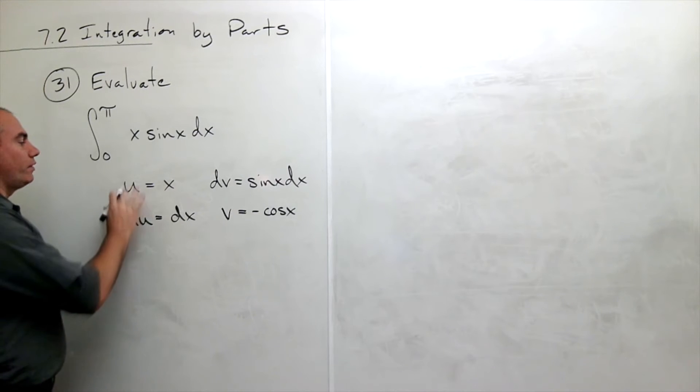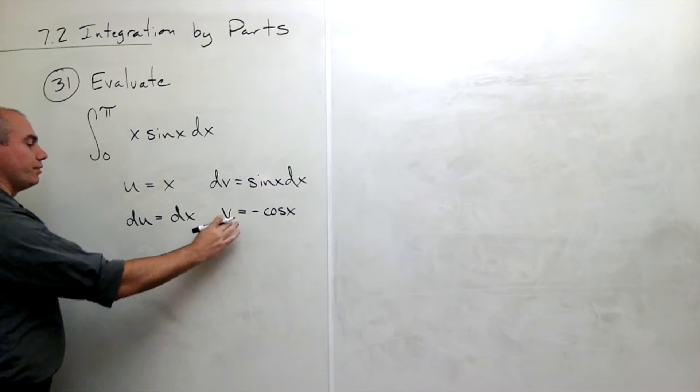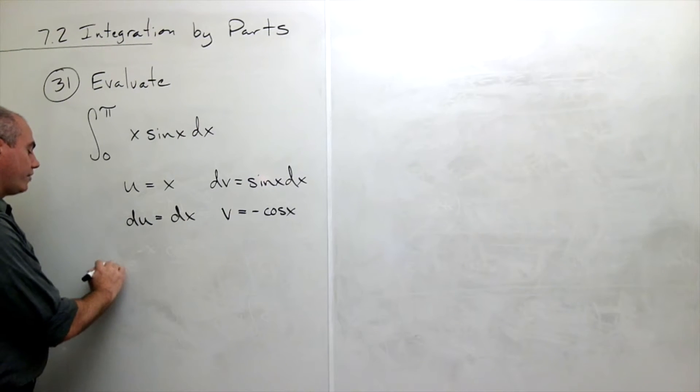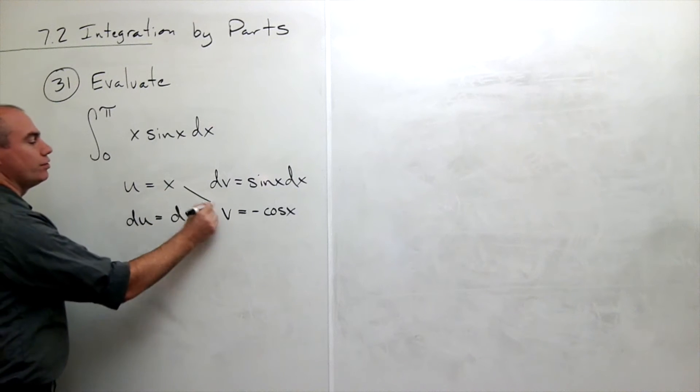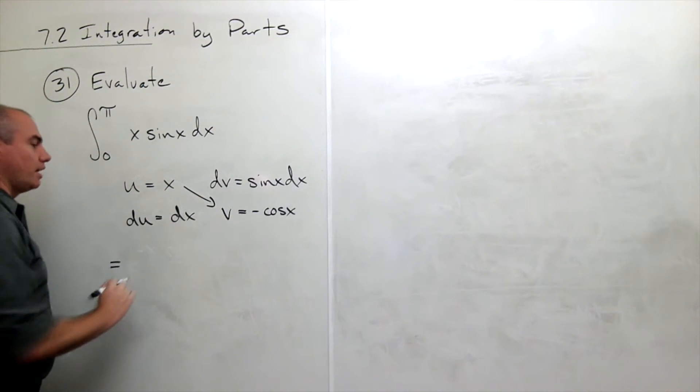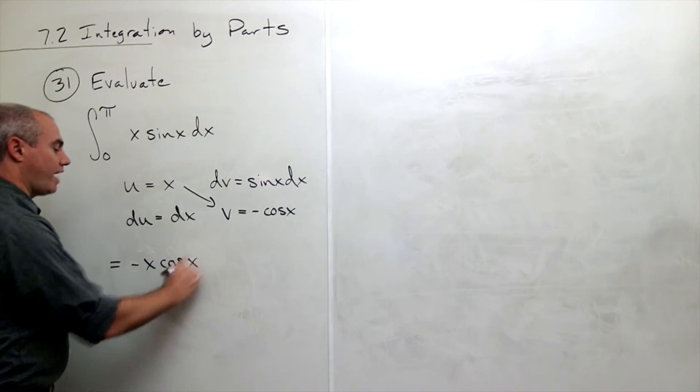So now that we have broken this up into my u, dv, du, and v, I can rewrite the integral. And the way that I do that is I take u times v, negative x cosine of x.